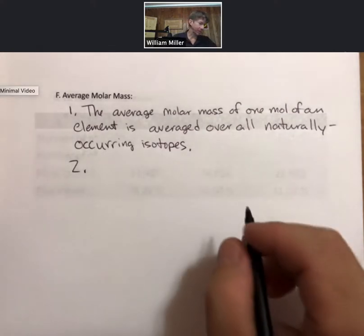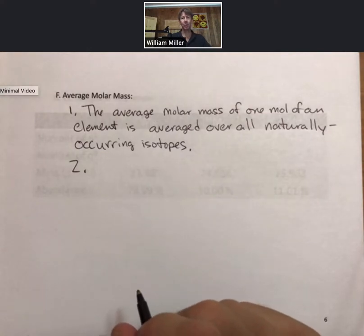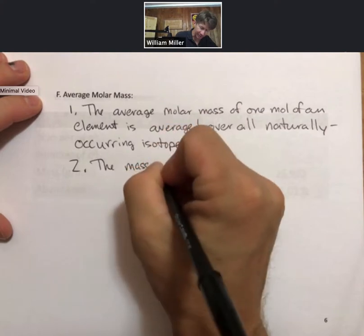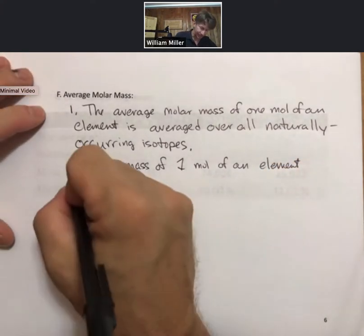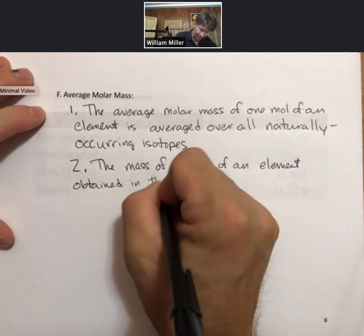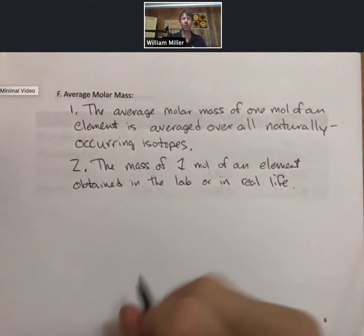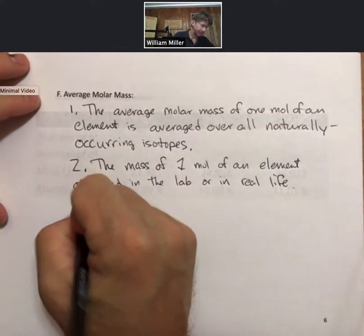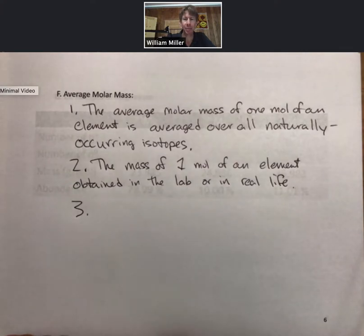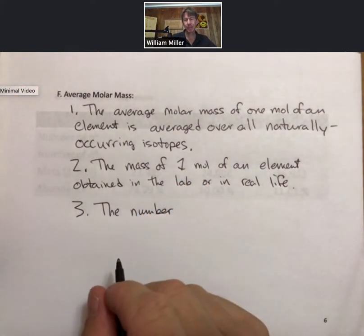This will be the mass of one mole of an element obtained in the lab or in real life. So all of the naturally occurring isotopes, you just happen to get the average of all of them. And three, the average molar mass is the number written under the chemical symbol for each element on the periodic table.